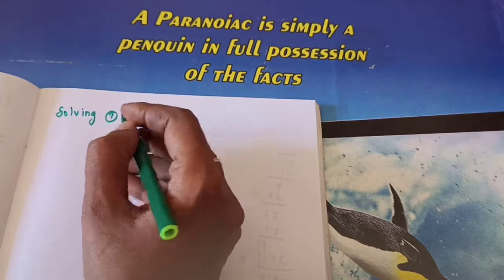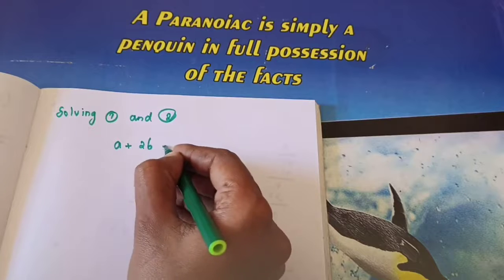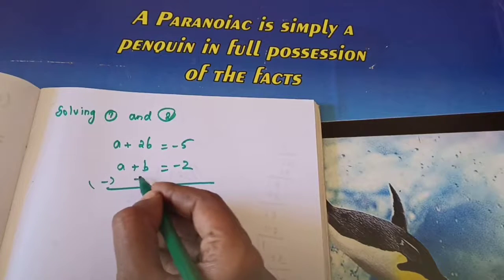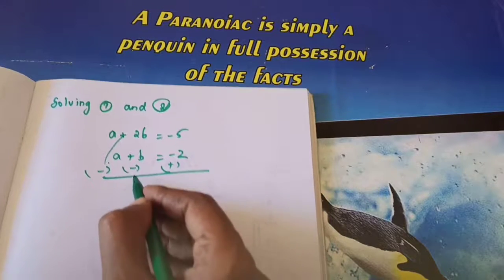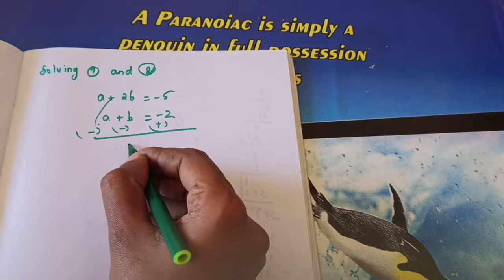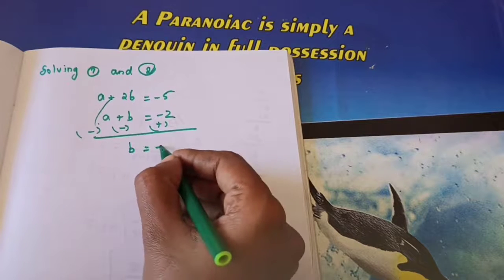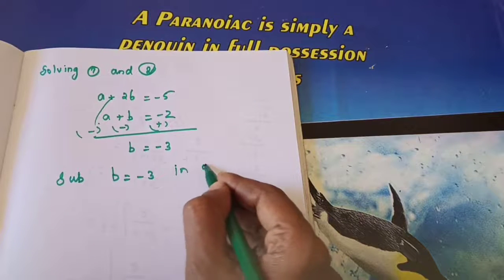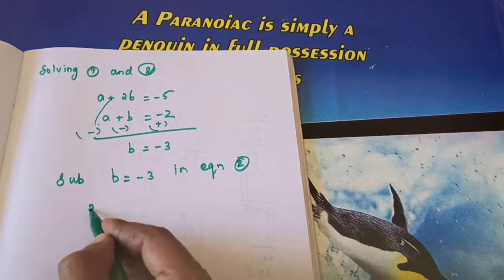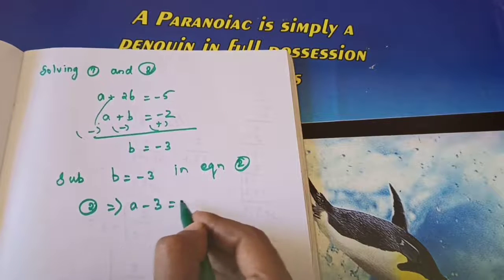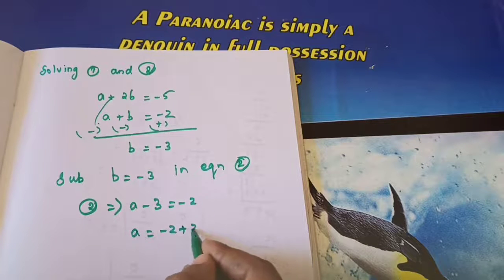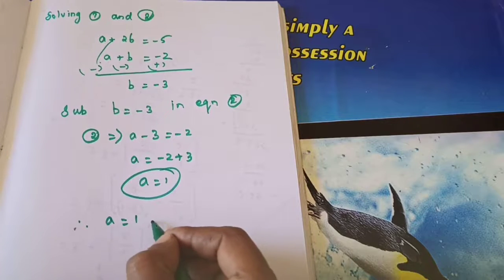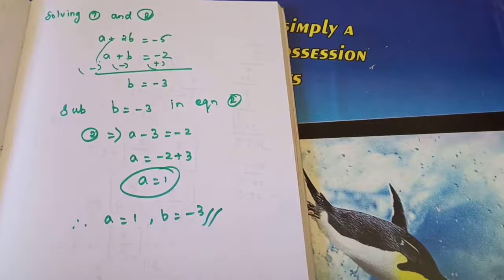Solving equations 1 and 2: A plus 2B equals minus 5 and A plus B equals minus 2. Subtracting equation 2 from equation 1: B equals minus 3. Substituting B equals minus 3 into equation 2: A minus 3 equals minus 2, so A equals 1. Therefore A equals 1 and B equals minus 3.